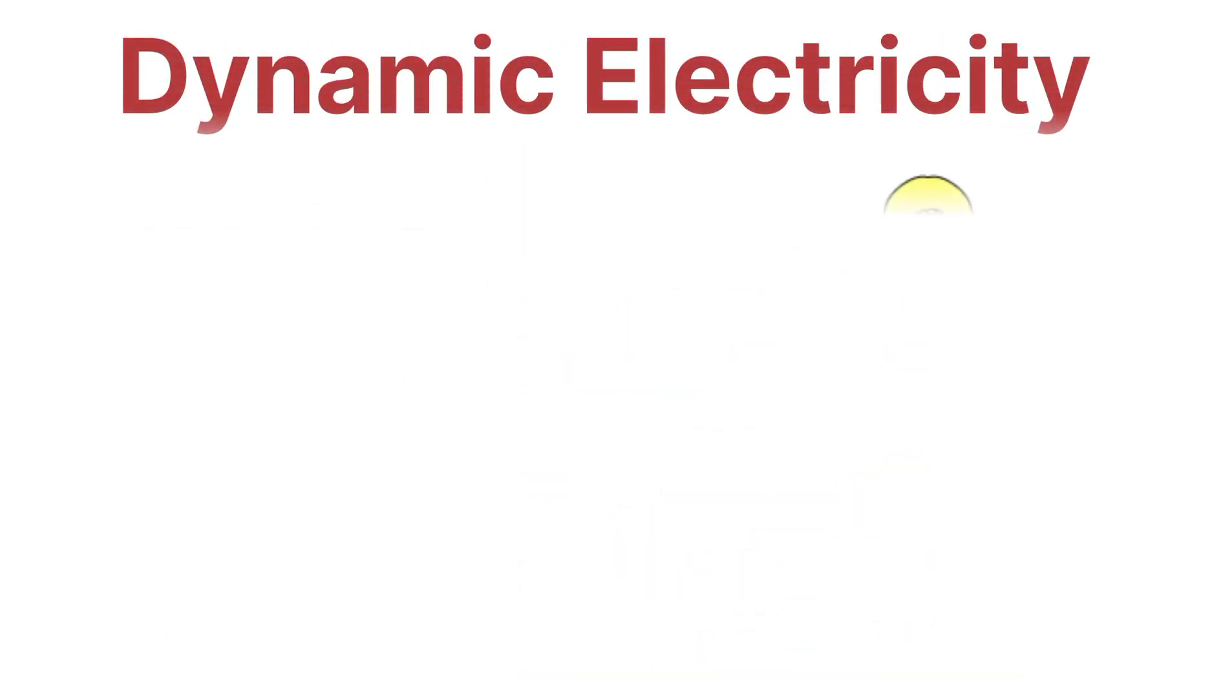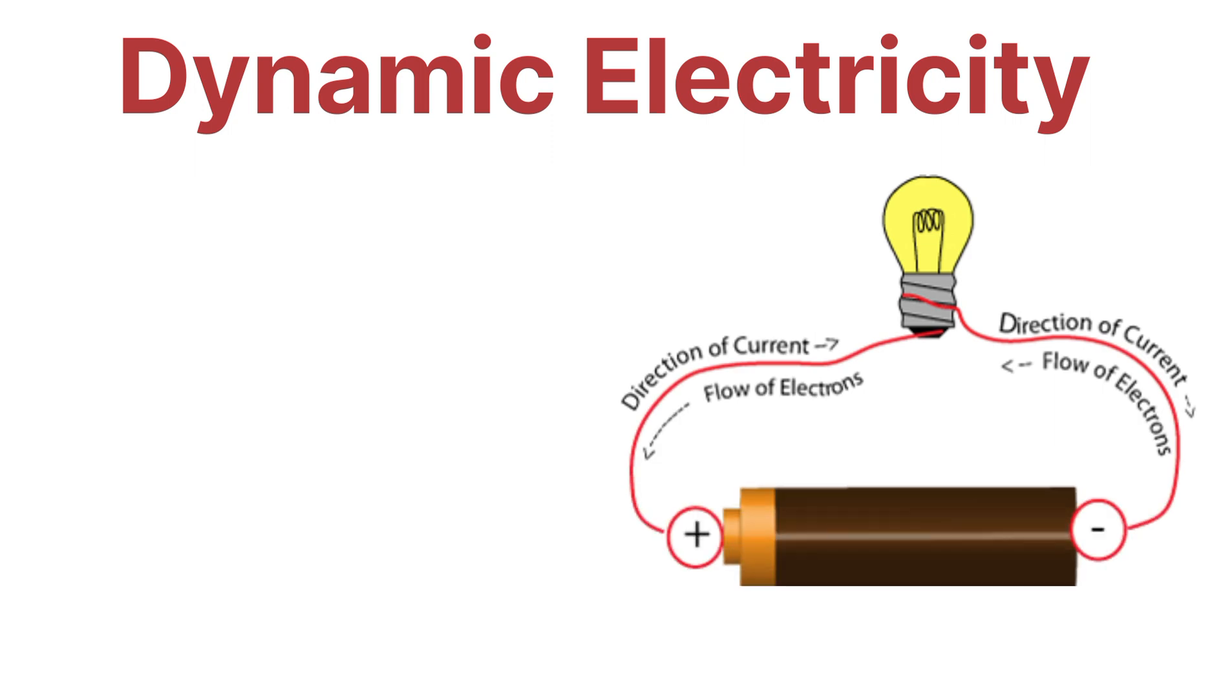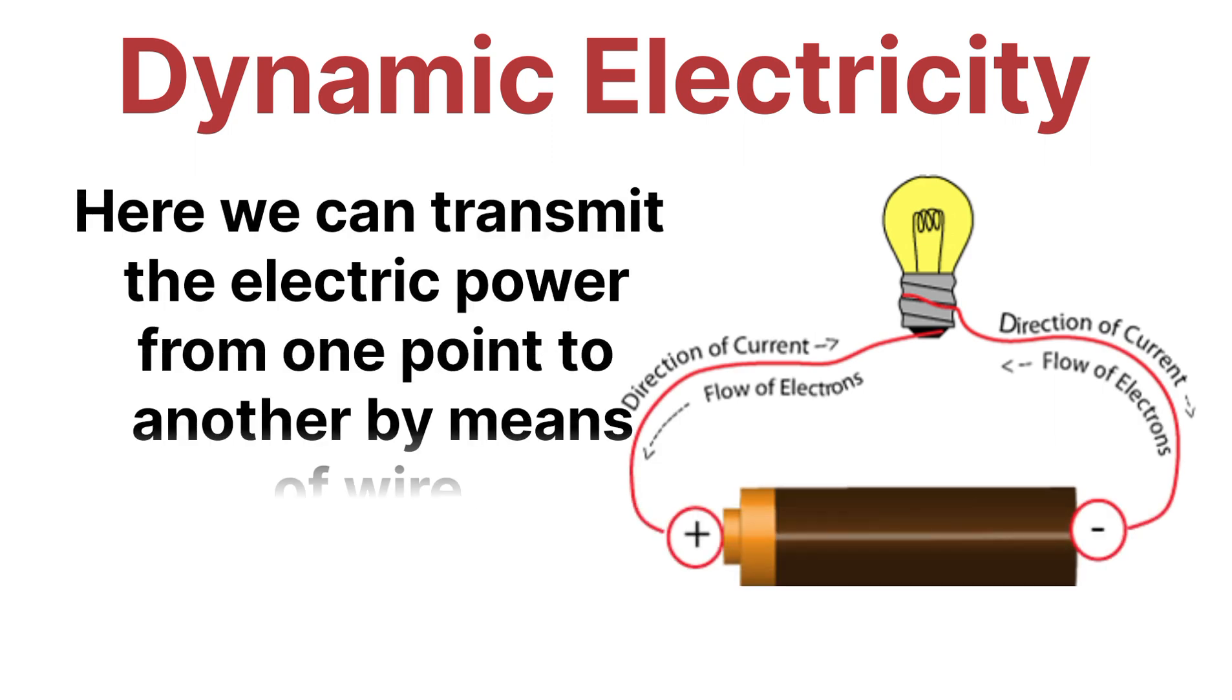Now let's talk about what is dynamic electricity. Dynamic electricity is that type of electricity by which we can transmit electrical power from one point to another point with the help of a conductor. This is very important. Generally we are using dynamic electricity in day-to-day life.